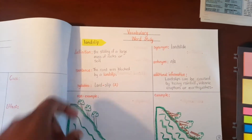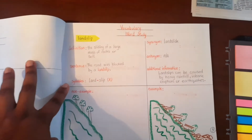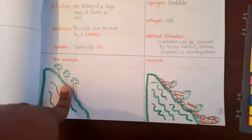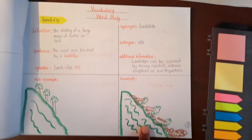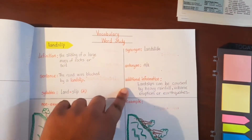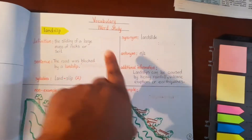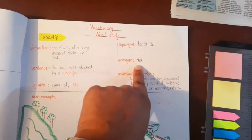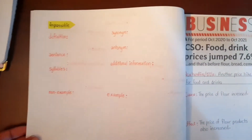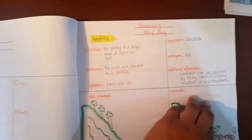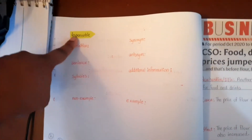I have definition, sentences, syllabicate the word. I have pictures of a non-example and an example, synonyms, antonyms, and any additional information. Now, if the item is not applicable, you have them write N/A. With that same article, I was able to pull out two words — I completed landslip as well as impassable.